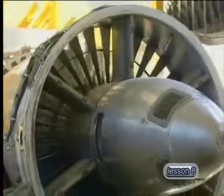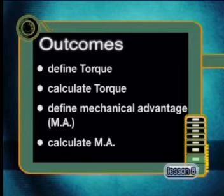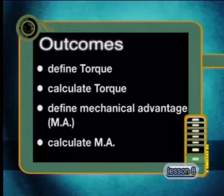Most machines make use of turning parts somewhere in their design. Why is this? What makes turning so special? In this eighth episode of the series on investigating forces, we will find out why understanding turning forces plays such an important part in mechanical design. We will find out all about turning moments or torque, and we will learn how to calculate the torque on an axle. Then we will define mechanical advantage and investigate how it applies to simple machines.